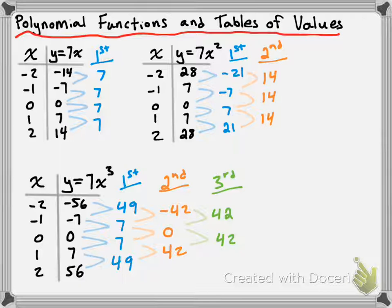What we have here is y equals 7x, which is a linear function you might recognize, and as such, it is a degree 1 polynomial function. So I'm going to get you to take a look at the first differences that we calculated there on the table of values, and we get a constant value of 7. When you have a linear function, you get constant first differences. And the constant first differences are equal to 7.